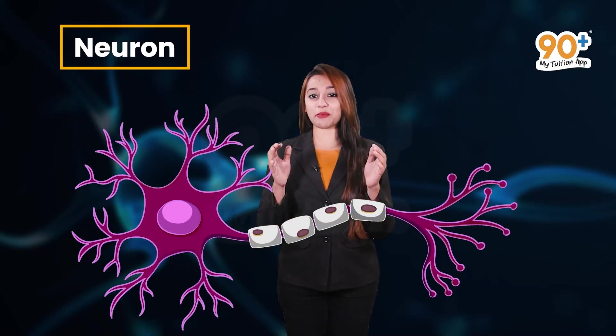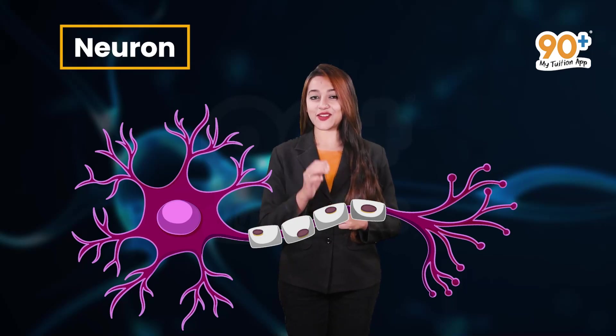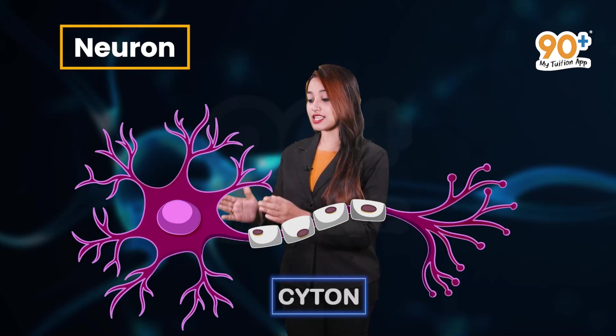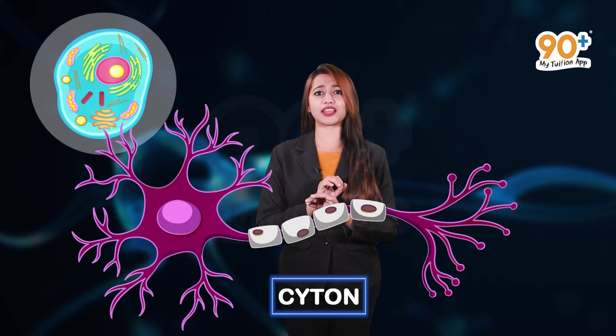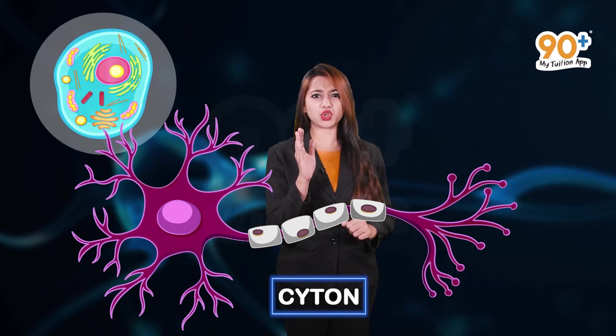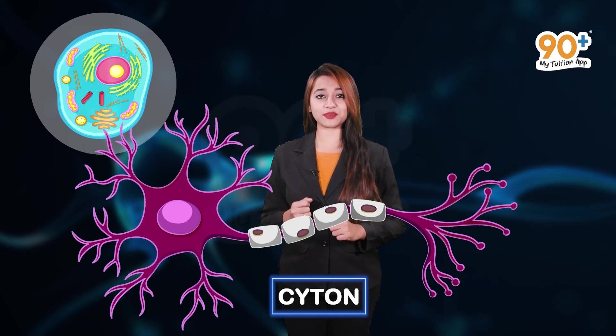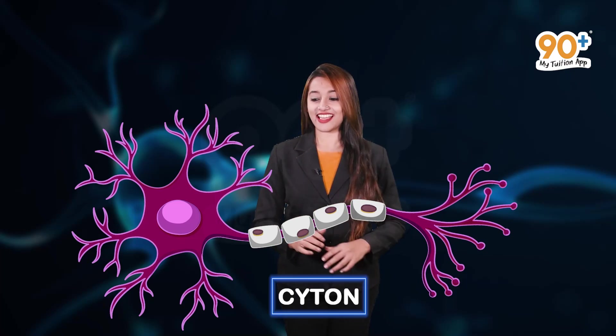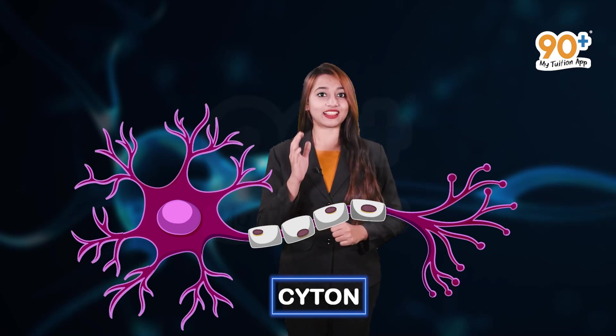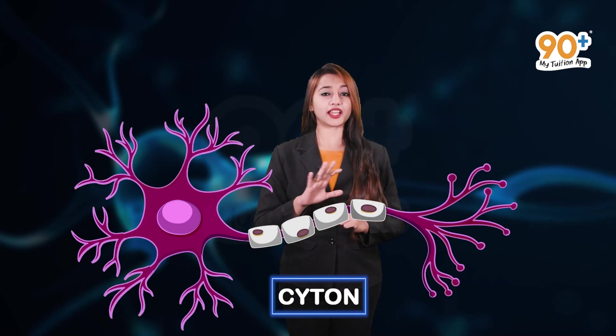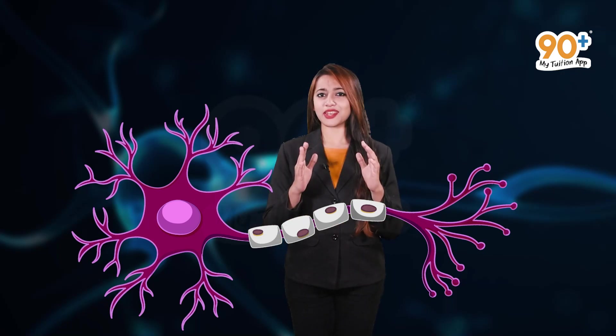Now, let us zoom into this neuron and study about this in detail. Firstly, starting with the cytone or the cell body. We know a typical cell have the nucleus and all cell organelles. The neuron is also having these kind of structures and the cytone contains the nucleus, the endoplasmic reticulum, the Golgi body, mitochondria and all other components.